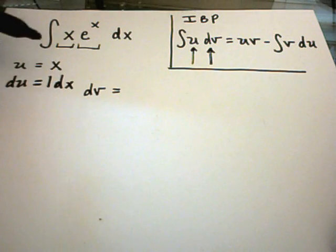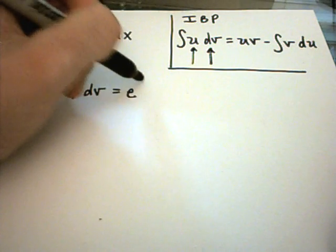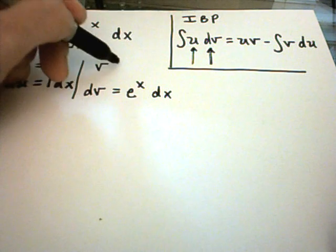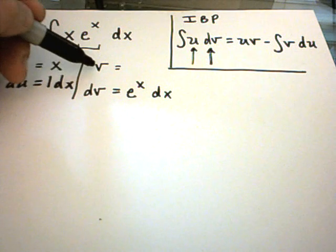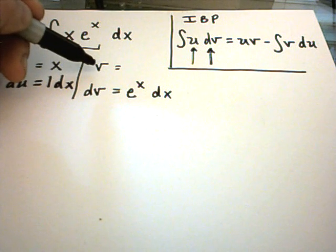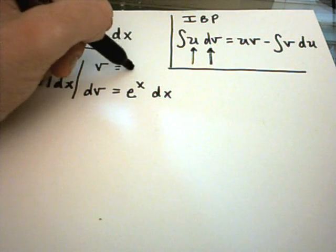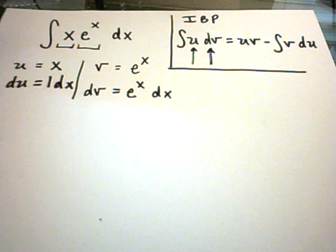I'm going to pick dv to be the rest of the problem: e to the x dx. To get back to v, since I have the derivative of v, I need to find the antiderivative. The antiderivative of e to the x is just e to the x. On these problems, you don't have to worry about the plus c on this part.